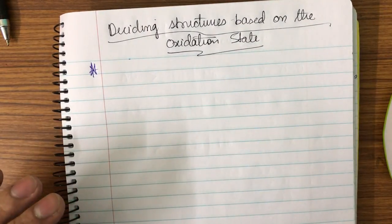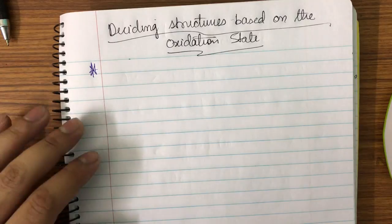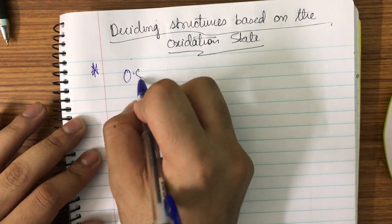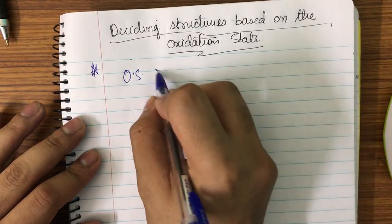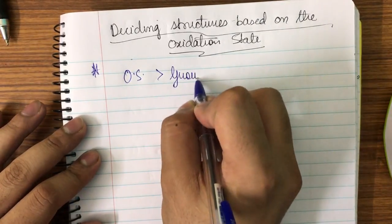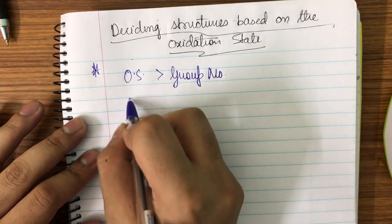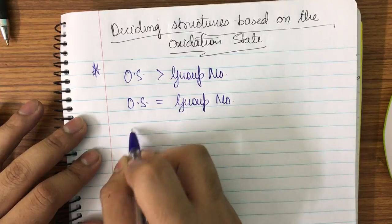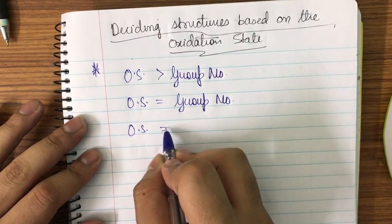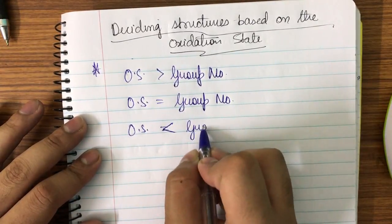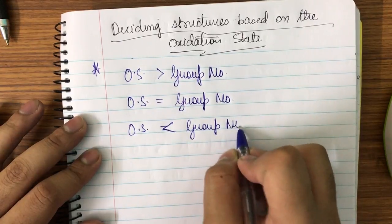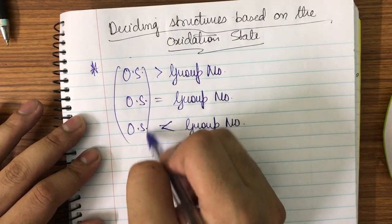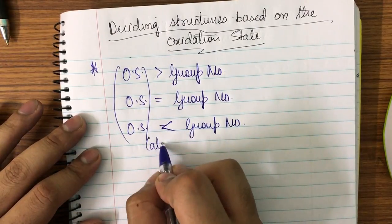Now let me first show you the theory before the examples. If I have oxidation state greater than the group number, oxidation state equal to the group number, or oxidation state less than the group number — there are basically only three cases. The oxidation state I'm talking about here is the calculated one, meaning what we get on calculation from the given compound.